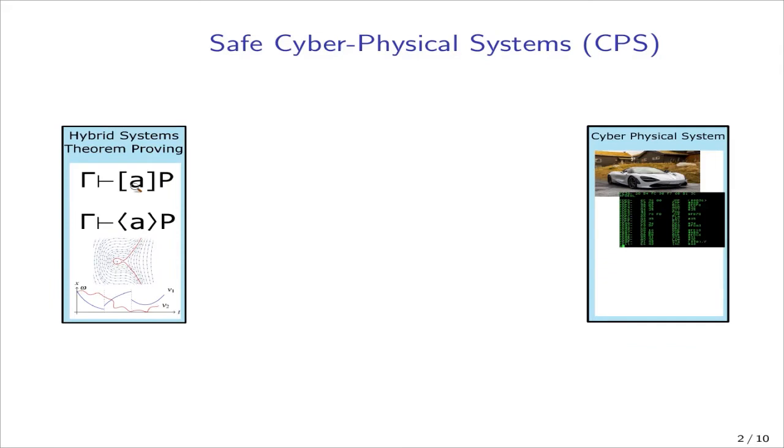Let's start with motivations. On the right, we have a cyber-physical system, that is, any physical system with a computer controlling it. There are many examples of this, for example, transportation systems, including almost any modern car, autonomous or not. On the left, we have some technologies for verifying these systems, specifically differential dynamic logic, DL.